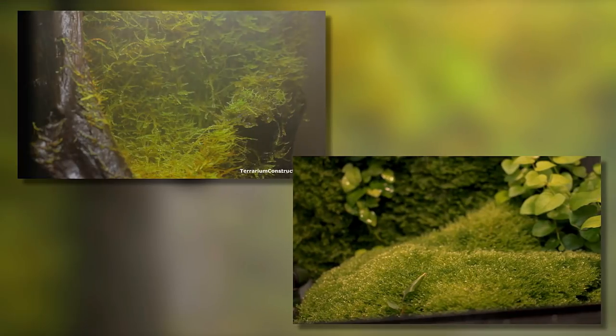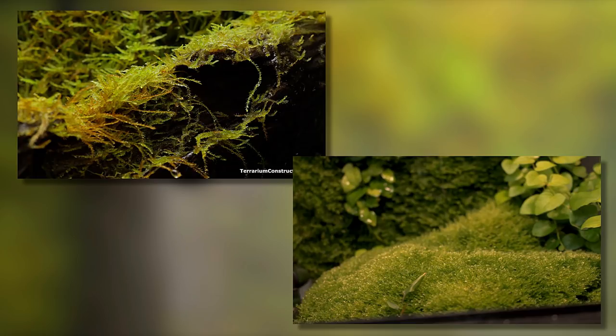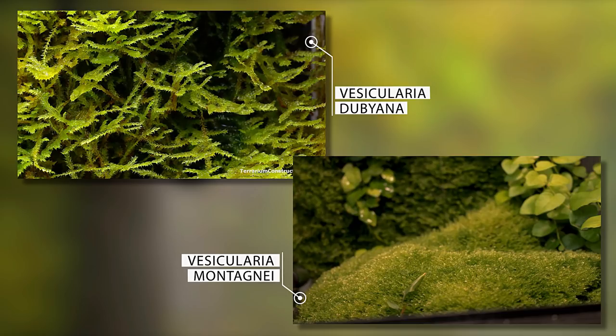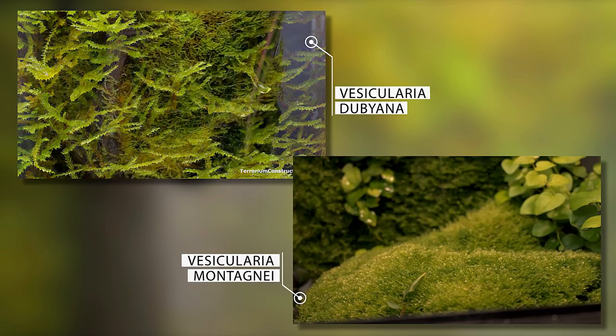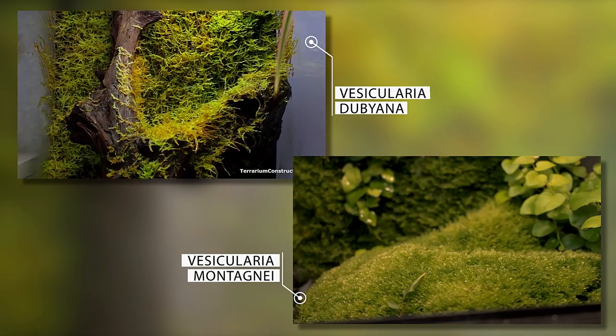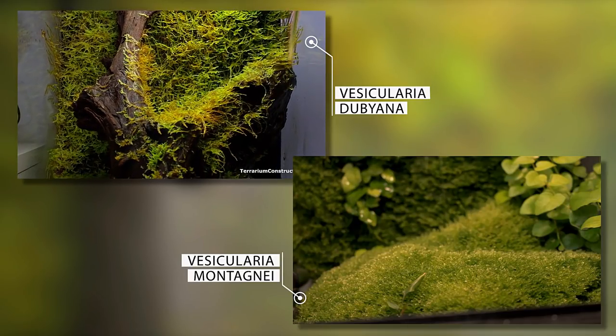Before we start, I come back to the moss species I used in my previous videos. In one of my first videos, I used Vesicularia dubiana species, and in my last video called How to Make a Moss Terrarium, I used Vesicularia montagnei. I saw after 6 months of growing that mosses don't have the same appearance.